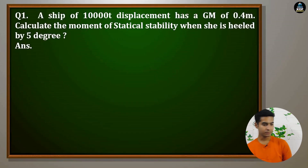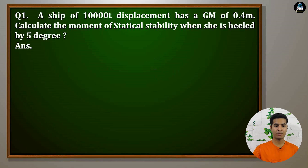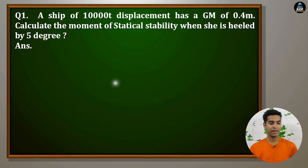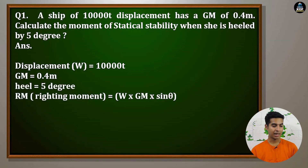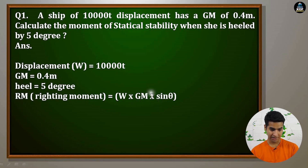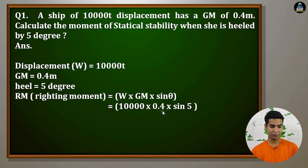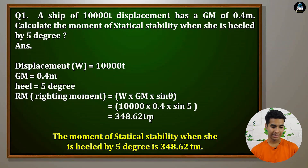Now it is time to do the numerical sums. Question 1: A ship of 10,000 ton displacement has a GM of 0.4 meters. Calculate the moment of statical stability when she is heeled by 5 degrees. This is less than 15 degrees, so we will use the short formula. Given: displacement = 10,000 tons, GM = 0.4 meters, heel = 5 degrees. RM = displacement × GM × sin θ = 10,000 × 0.4 × sin 5° = 348.62 Tm. So the moment of statical stability when she is heeled by 5 degrees is 348.62 Tm.